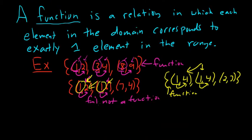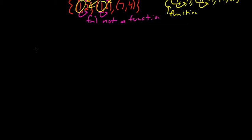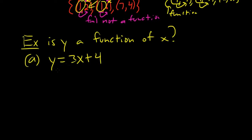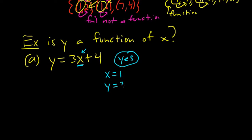Let's talk about determining if y is a function of x. We say y is a function of x if, given a number for x, each x corresponds to one y value. For example, y = 3x + 4 — no matter what number we plug in, we get 3 times that number plus 4, which is a single number. So the answer is yes. Similarly, x + 2y = 6 — if we plug in a number for x and solve for y, we get one number. So the answer is also yes.